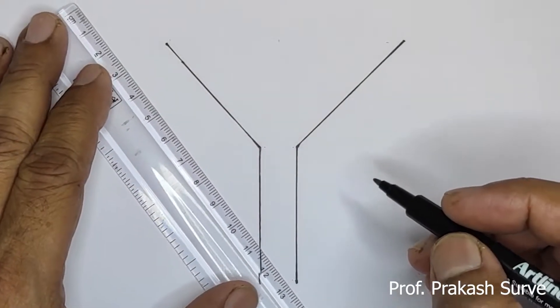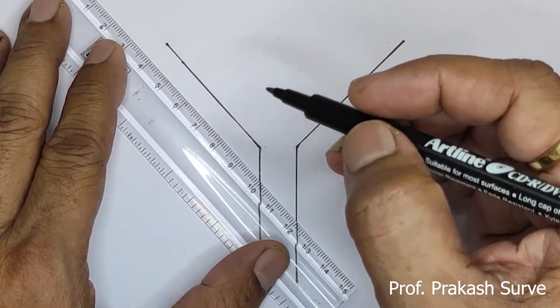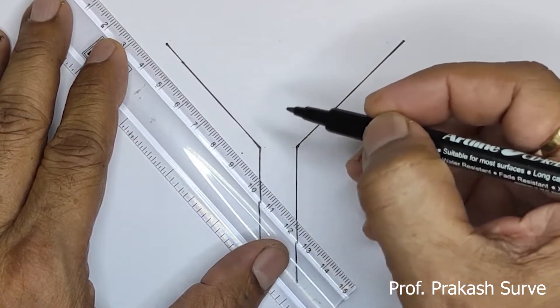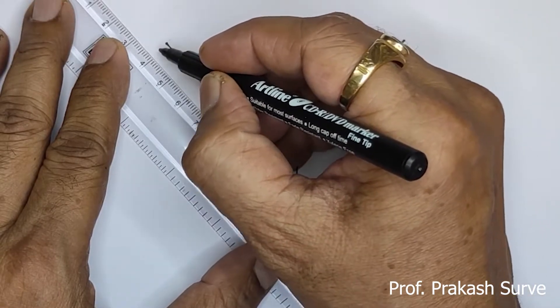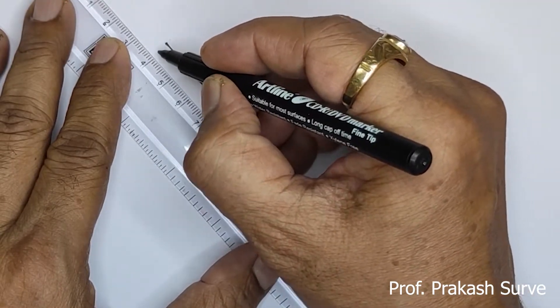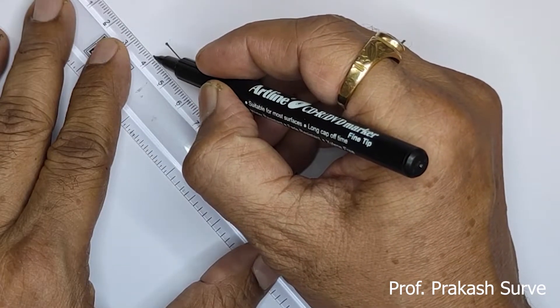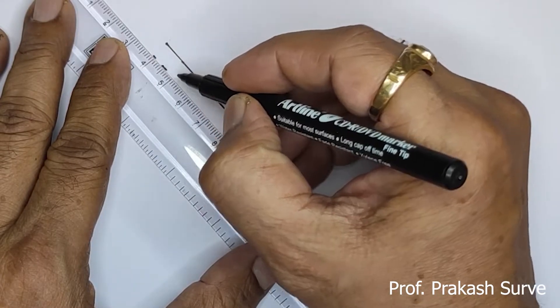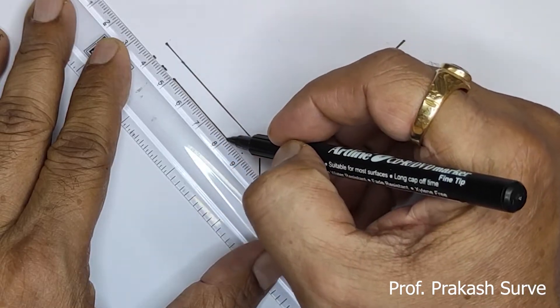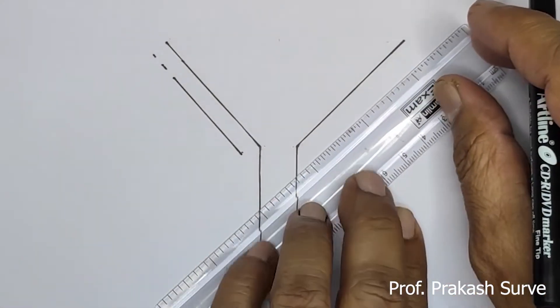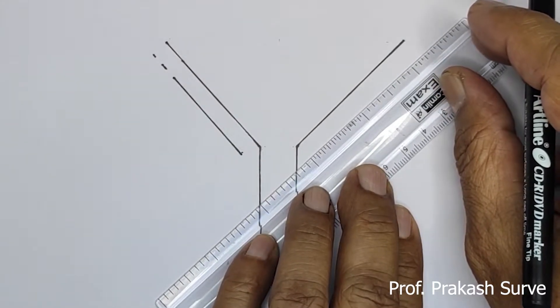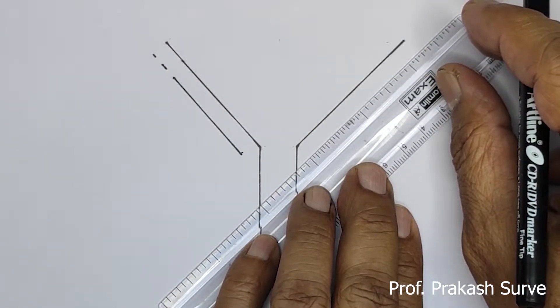Now we'll draw the corresponding line to this from here. Same way here also we'll draw the corresponding line to this.